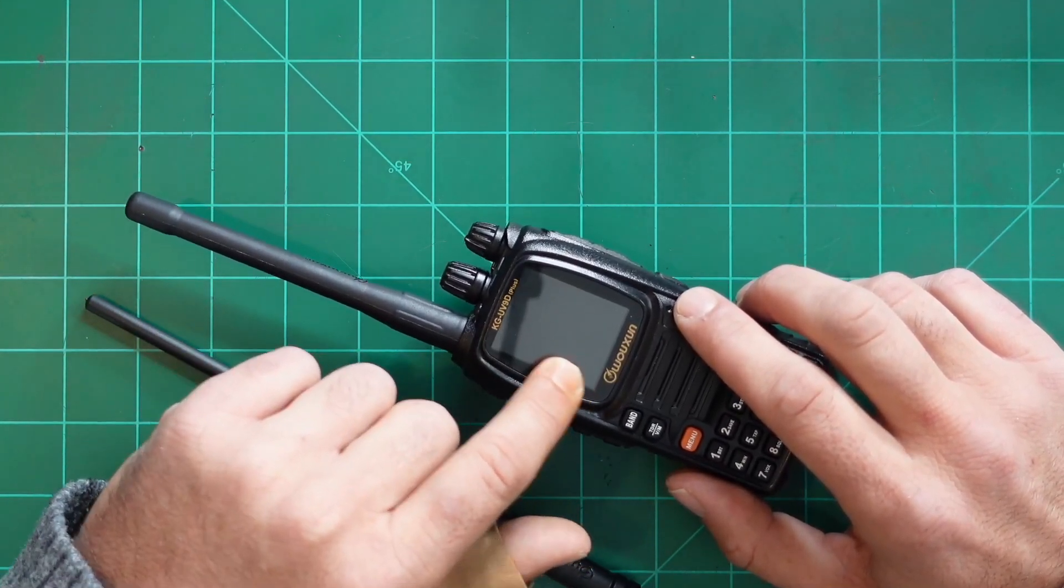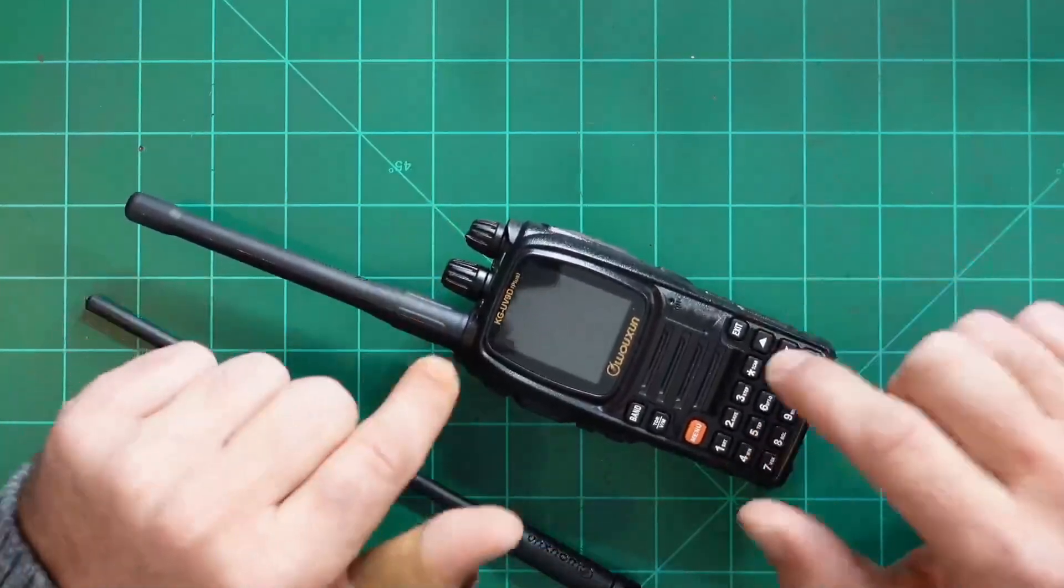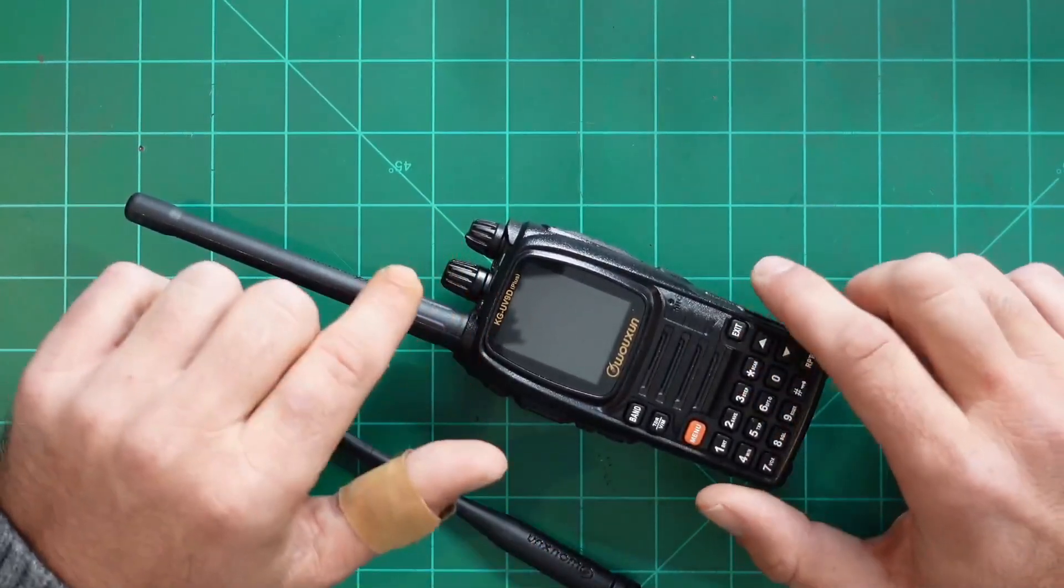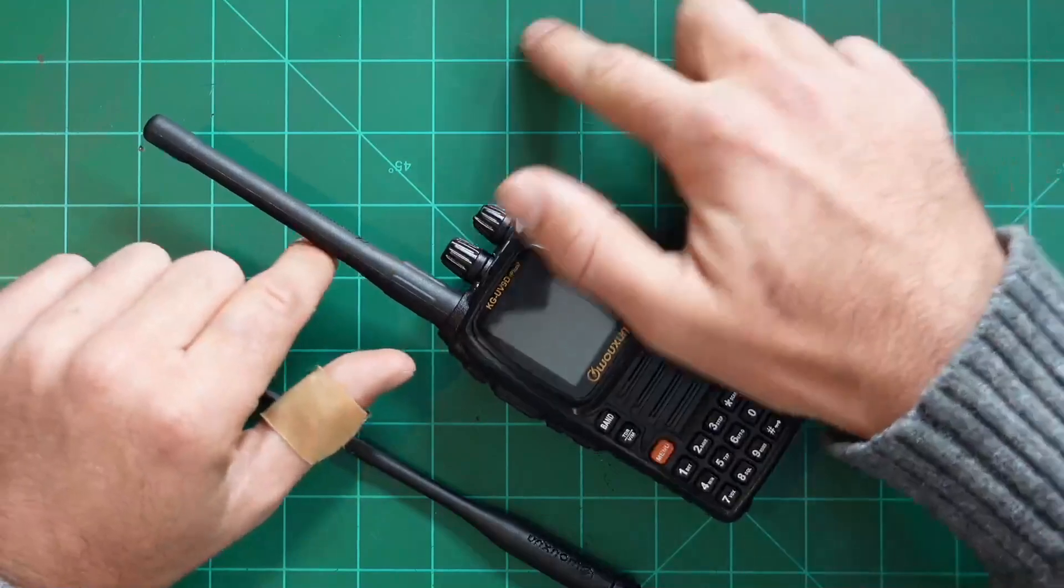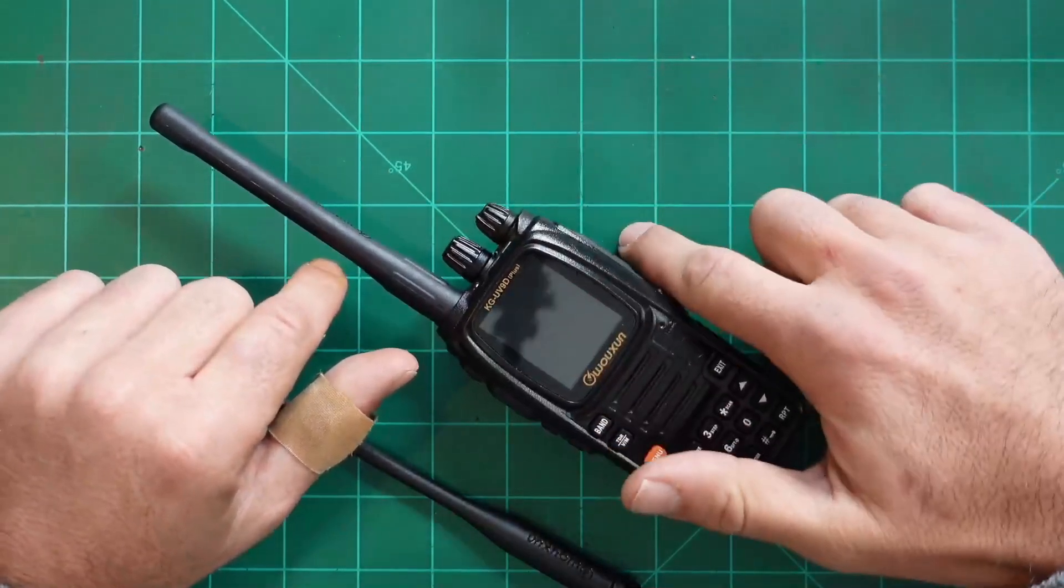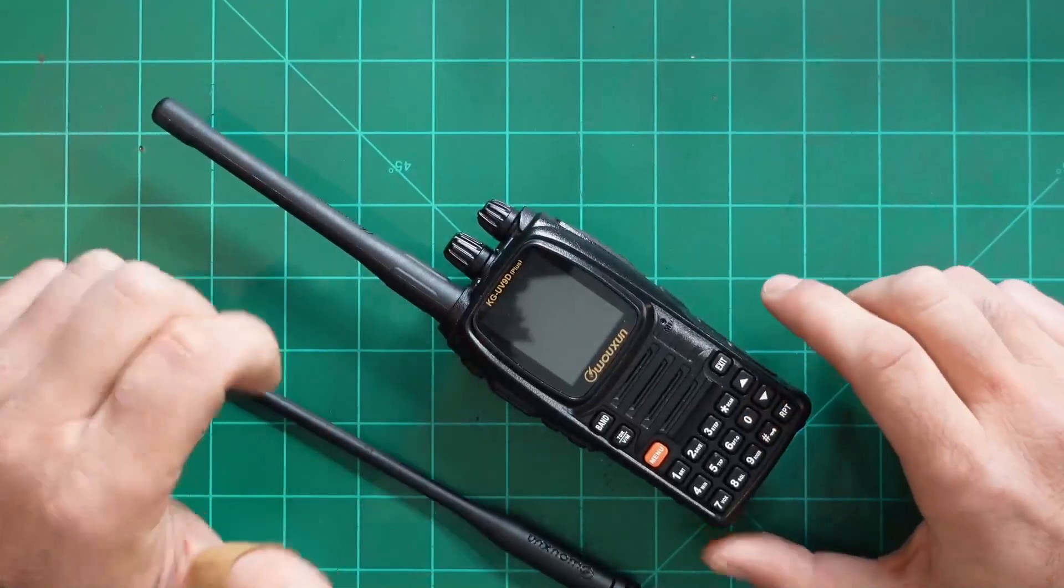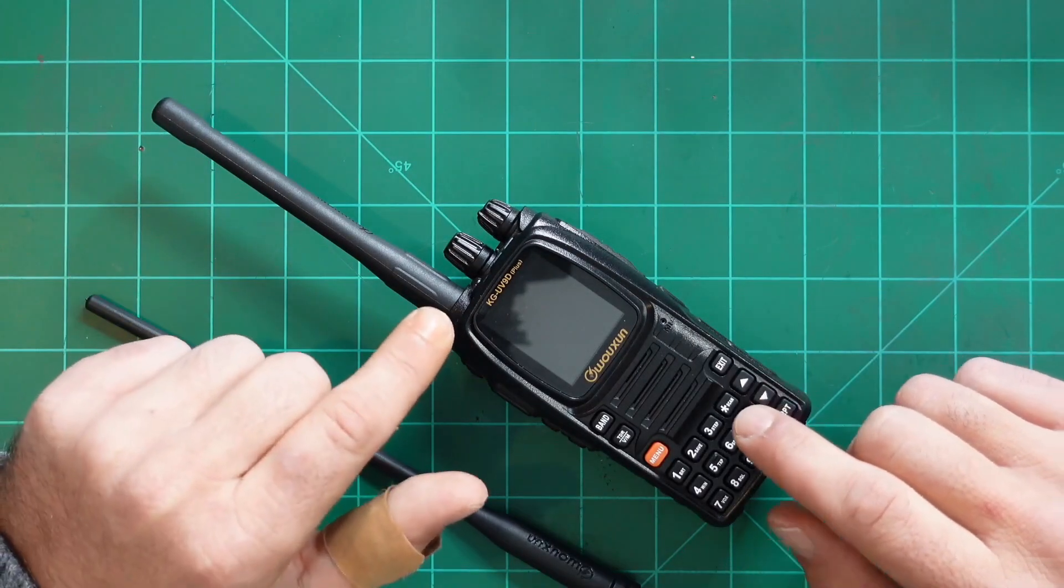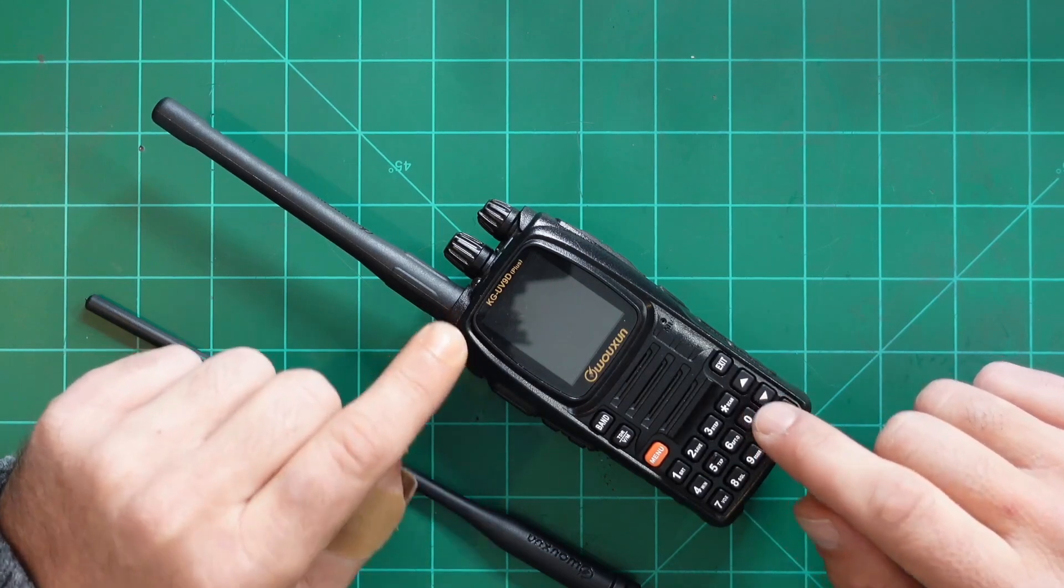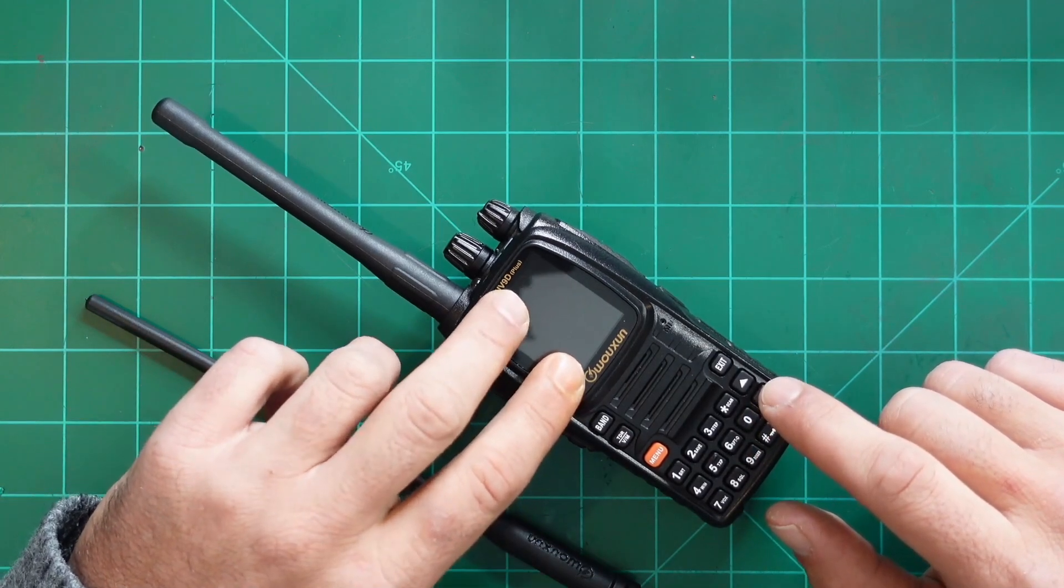Or a combination of VHF and UHF. But additionally, this is also capable of crossband repeat. So as you're receiving a signal on one frequency, it's retransmitting it on the other frequency at the same time. That's kind of a cool feature that I've always kind of wanted in a handy talky radio.